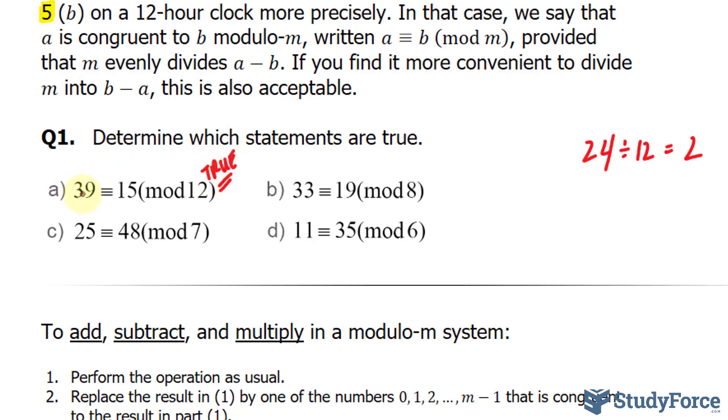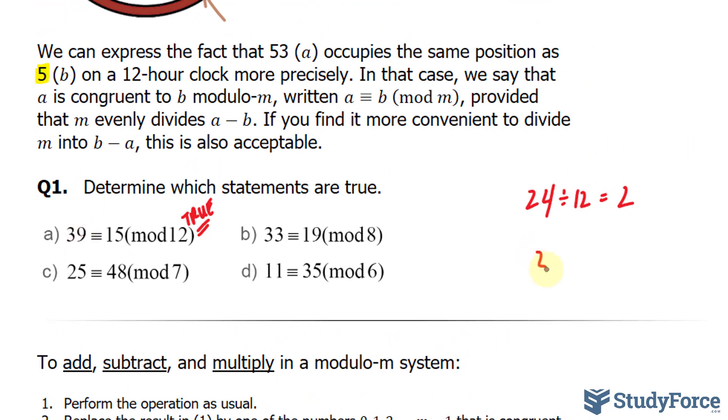Another way you could have figured this out is you could have found the remainder of each of these. For example, 12 fits into 39 three times with a remainder of three. 15 fits into 12 once, also with a remainder of three. Because the remainders are the same, it's another reason for us to say that it's true.